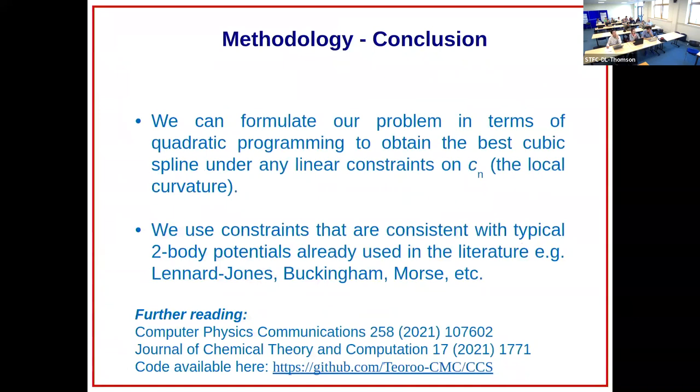I'll just conclude and of course acknowledge people involved. Essentially the idea with the curvature constraint spline is to formulate our problem in terms of a quadratic programming problem, meaning that we can find the best cubic spline under a certain constraint that we put. With this we can essentially encode the behavior of typical two-body potentials in the literature - Lennard-Jones, Buckingham, Morse - there are multiple examples.